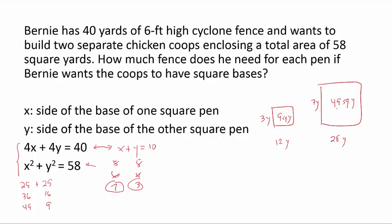If we solve the first equation for X, then we can substitute that and see that this becomes X squared minus 10X plus 21 equals 0.